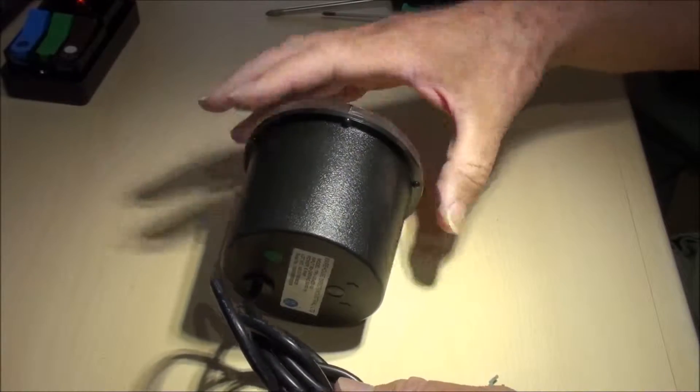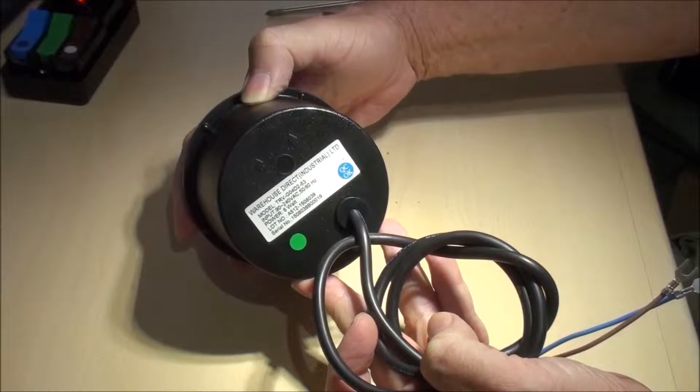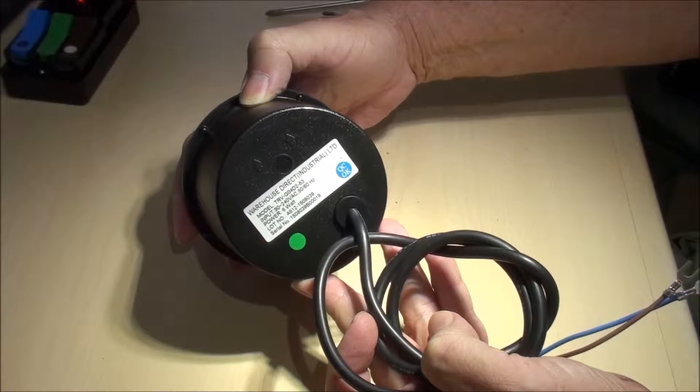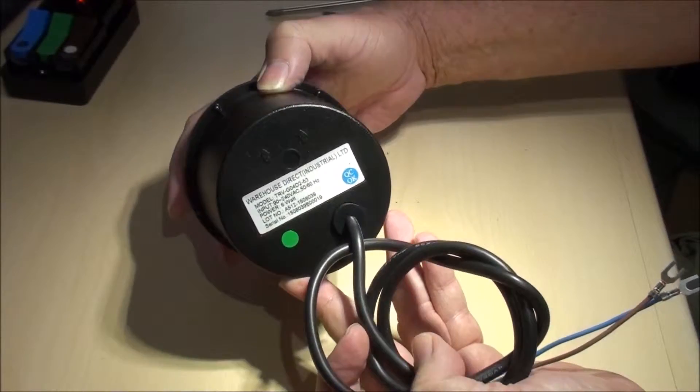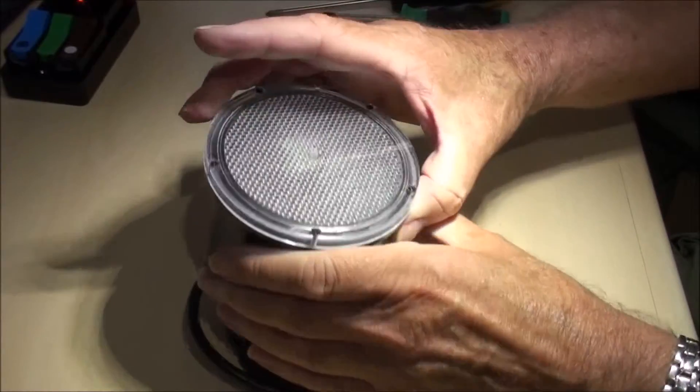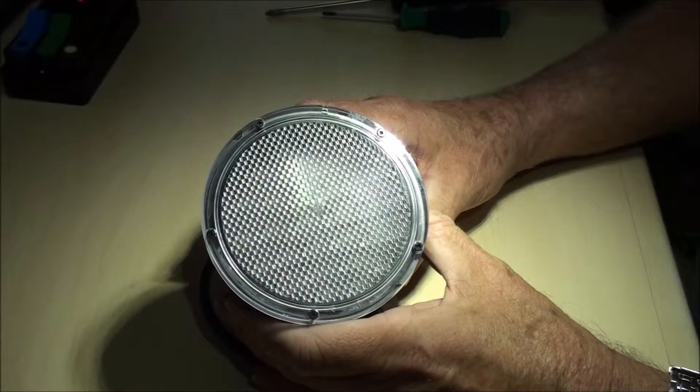On the rear of the module you need to double check to make sure the voltage, as you see on this one, says input 90 to 240 volt AC. Now this module has been removed from its traffic light because it's much simpler to do this job on the bench.